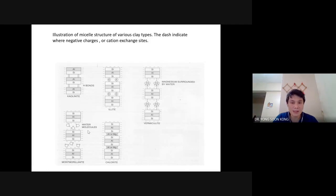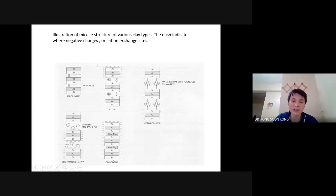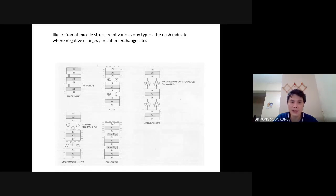In some cases, there are other 2-1 layers that do not swell. For instance, chlorite. This chlorite has no chlorine — the name might mislead you, but they don't have chlorine. What's special about this kind of clay is that even though they are a 2-1 layer, between them they have aluminium — or probably magnesium — but the key one is aluminium.